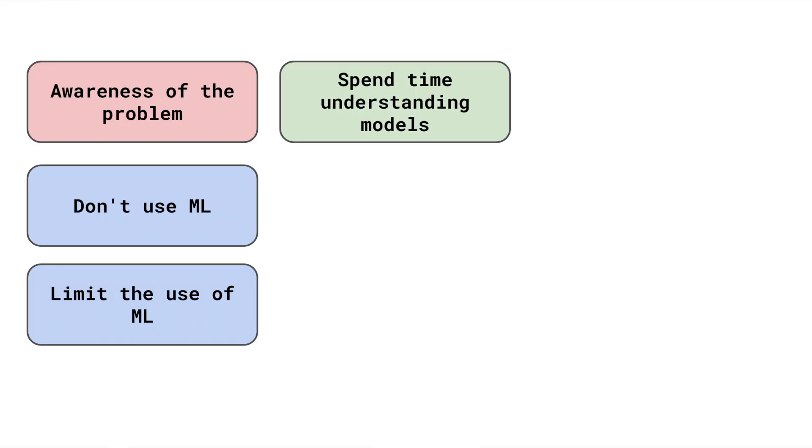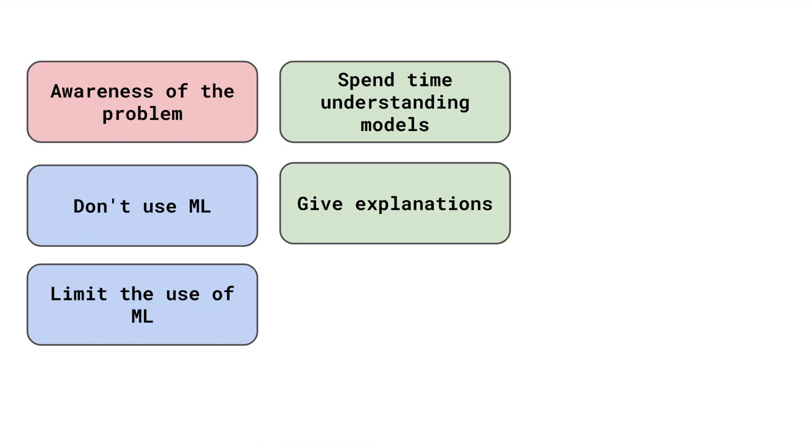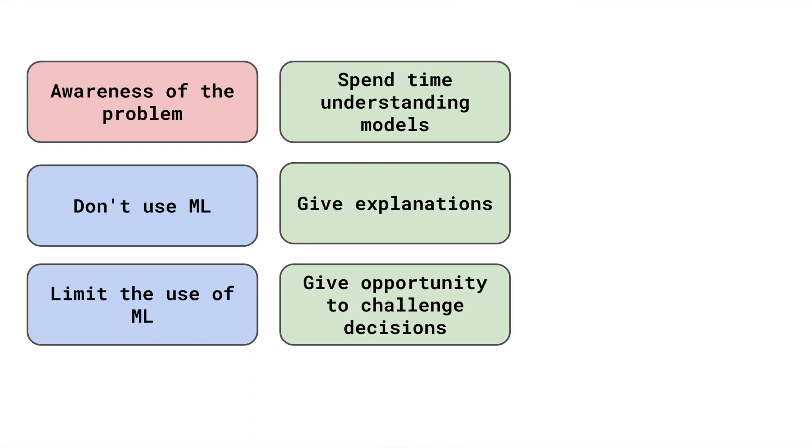Model interpretability is also important for fairness. This involves understanding how predictions are made. Understanding the reasoning behind predictions will help ensure that they are made in a fair way. Interpretability will allow us to give explanations to users. Model predictions can have serious consequences for these people, and they deserve reasons for any decisions based on them. Once a user is given an explanation, they can decide whether it is unreasonable, and if so, they must be given the opportunity to challenge these decisions — making it far more likely that unfair decisions will be corrected.